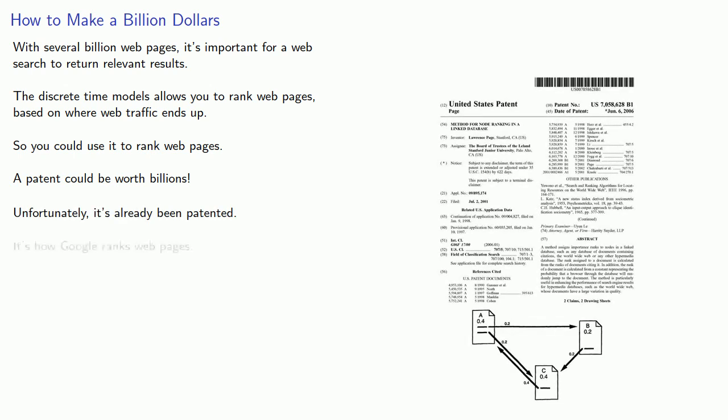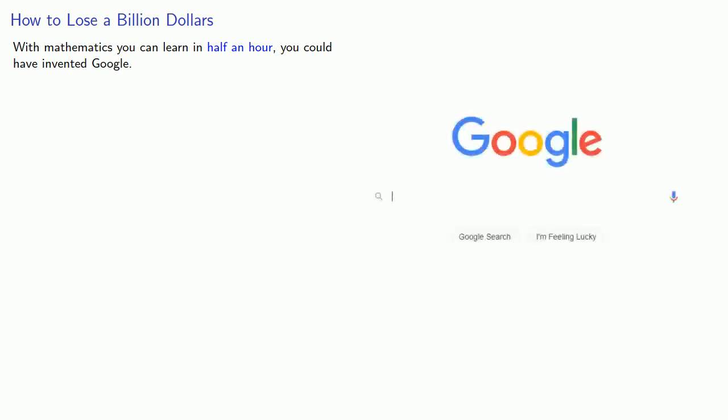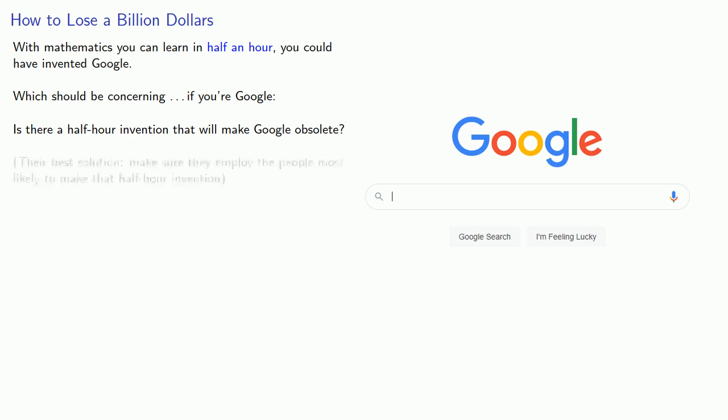This is, in fact, how Google ranks web pages. And here's how to lose a billion dollars: With the mathematics you can learn in half an hour, you could have invented Google, which should be very concerning if you're Google. Because the question that keeps Google shareholders up at night is: Is there a half-hour invention that will make Google obsolete? This is something that's very concerning to them. And so their best solution: they make sure they employ the people most likely to make that half-hour invention.